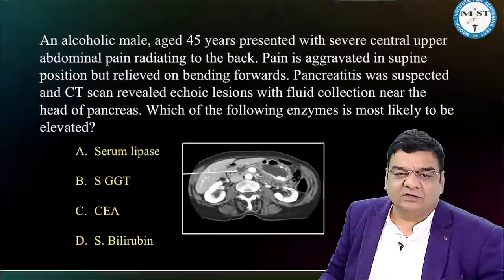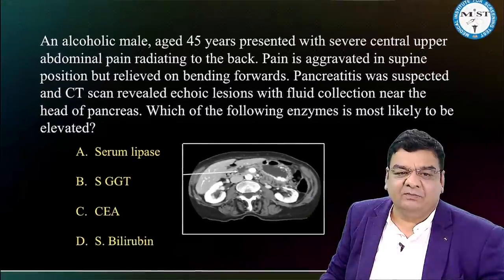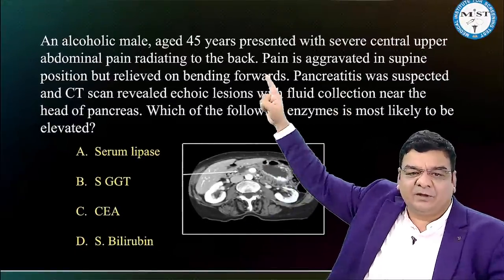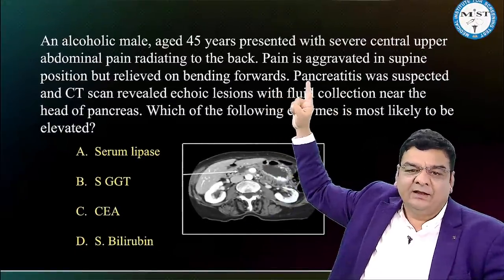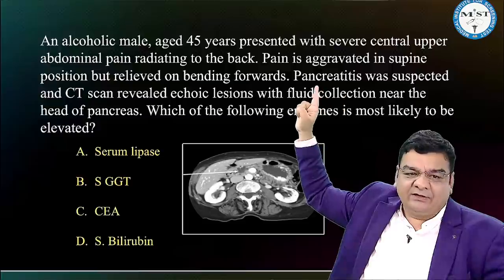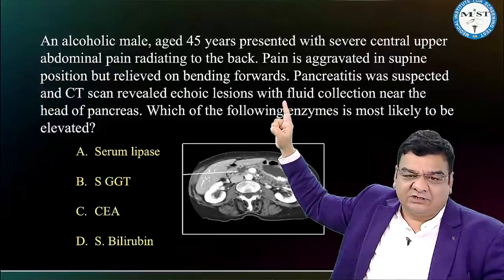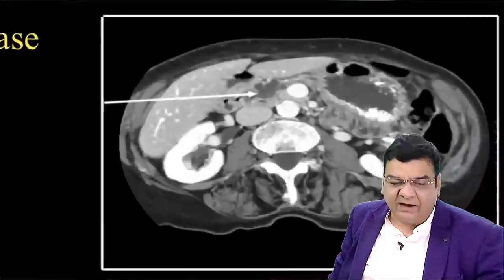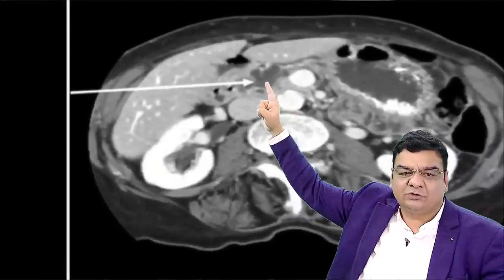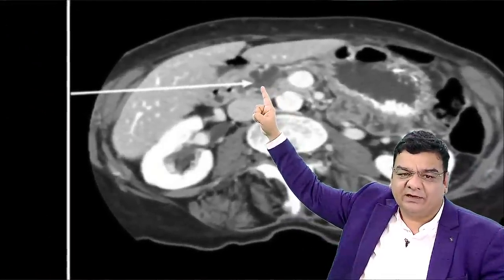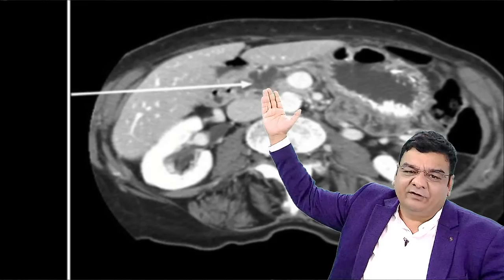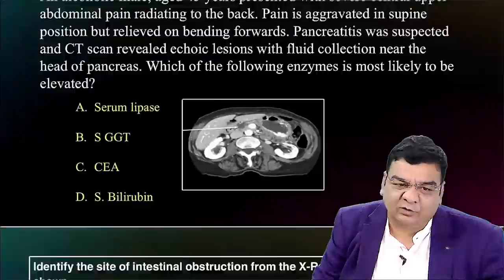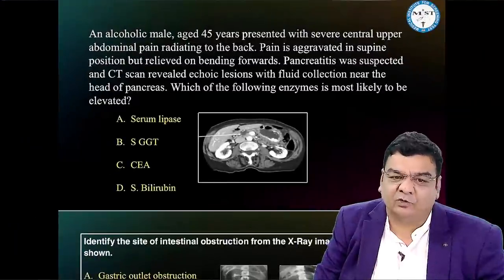They may also give a clinical situation of severe central upper abdominal pain radiating to the back, aggravated in supine position, relieved on bending forward, with CT scan showing fluid collections — this is a pseudocyst of the pancreas. In pancreatitis, amylase and lipase are raised.